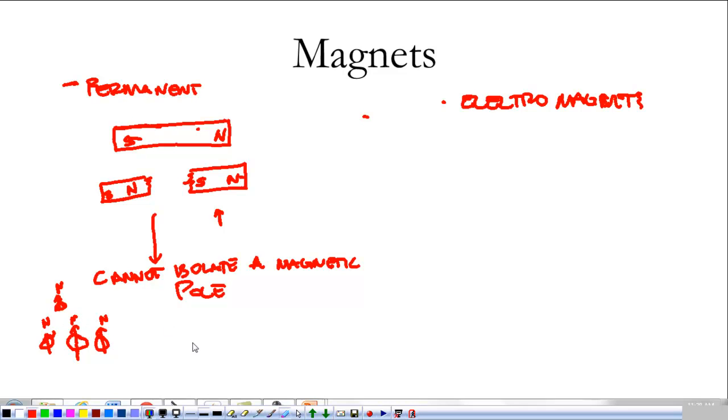Some materials like iron have randomized little dipoles all the way through that point in all sorts of little different directions. But if we put those near a magnet, they will line up, and that material will be temporarily magnetized. Other things like wood or paper or plastic, their magnetic dipoles can't move, and they're frozen. So they don't really interact with magnets at all.